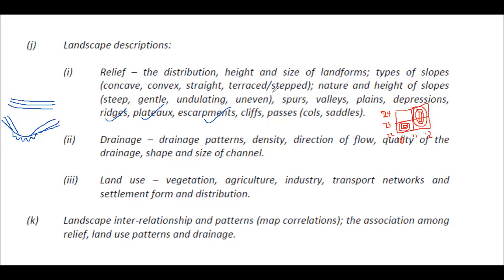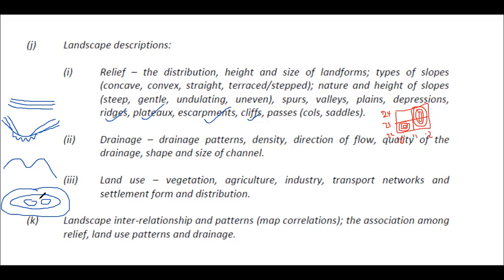Passes are little dips found in the land, especially along a ridge. On a topographic map, the land rises on two sides and dips in a small gap — that is the pass. The land rises, then dips at the pass, then rises again on the other side. If you are asked to identify that little area, that is the pass.